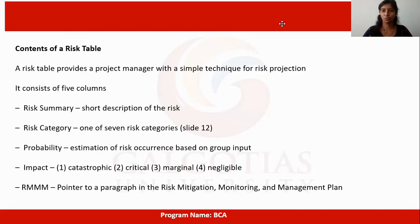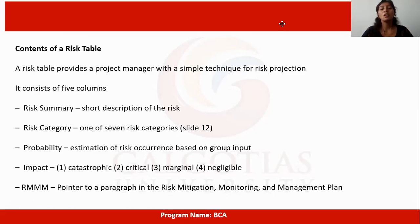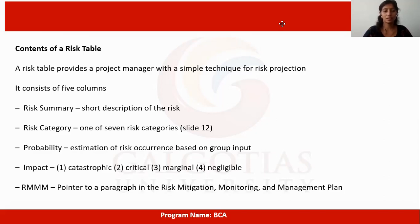A risk table provides a project manager with sample techniques for risk projection. It consists of five columns: risk summary — a short description of the risk; risk category — one of the seven risk categories; probability — estimation of risk occurrence based on group input; impact — rated as catastrophic, critical, marginal, or negligible; and a pointer to a paragraph in the risk mitigation, monitoring, and management plan.